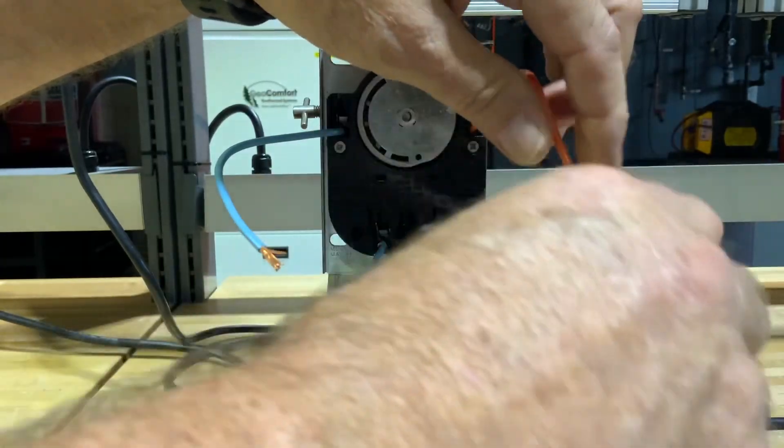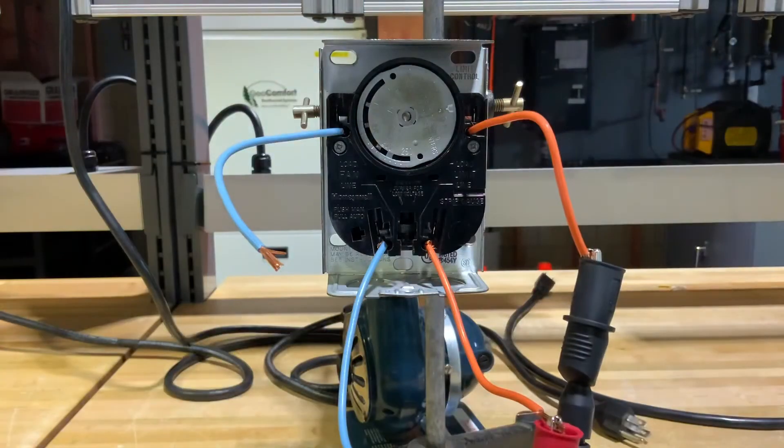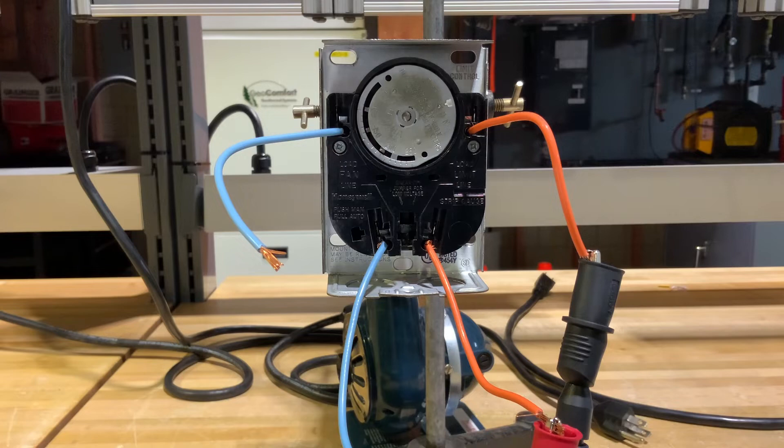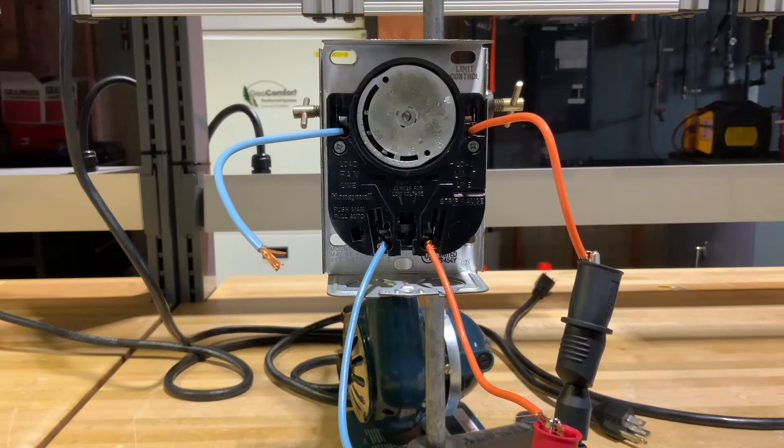When I hit a certain temperature - whatever that's set for, that looks like about 180 - so when I get under 180 degrees, that limit should reset, send power to our primary controller and try to start the unit again.